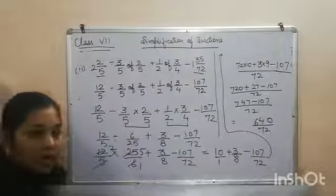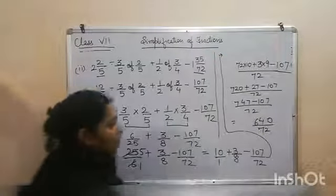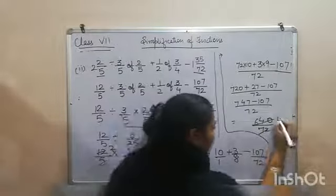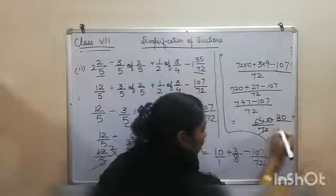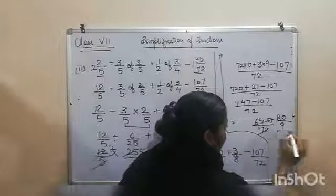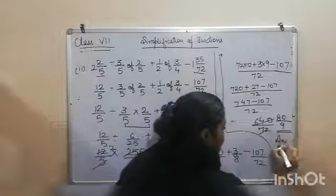Now you can see that it is not in the lowest form. So first of all, we have to convert it into lowest form. 8 eights are 64 and 8 nines are 72. Now it is in lowest form. So this will be our answer.